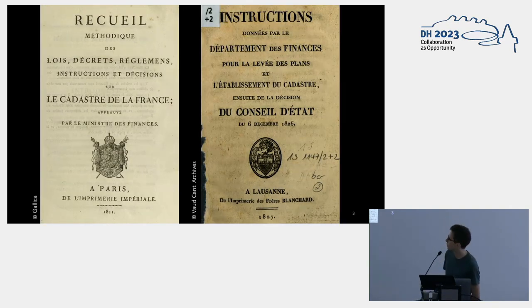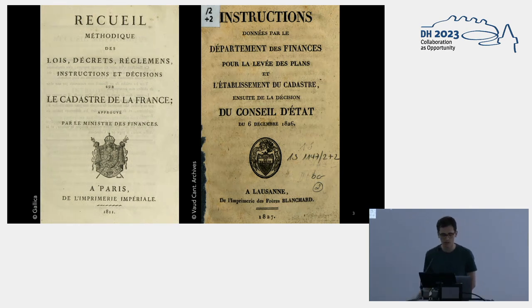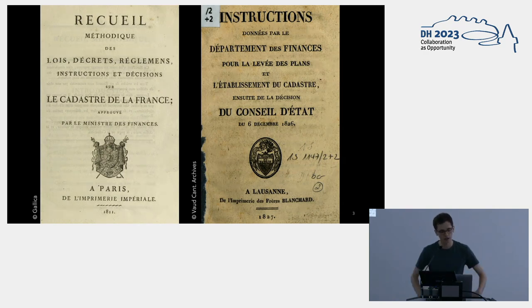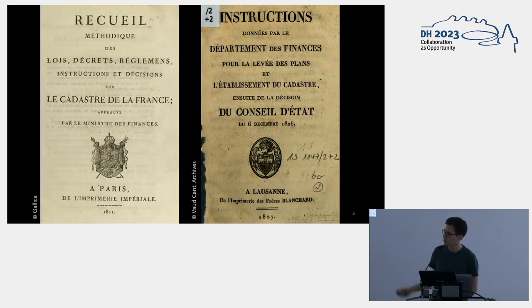Other documents were also established sometimes at a local level. For instance, this document from the Vaud administration in Switzerland. This document is published a bit later, 1827, but actually it takes almost all the recommendations and the rules from the Recueil. It copies them and adapts some of them. For instance, they say that the water should be colored in blue in this document. You might be surprised at the date, that is already 16 years later, after the fall of the first French Empire.